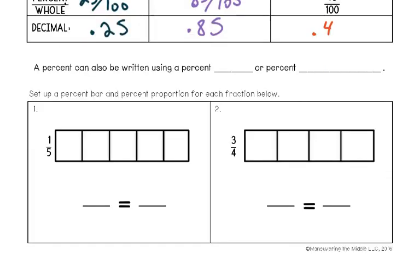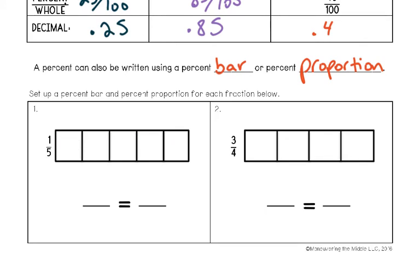We can also visualize percents with percent bars. Look at this bar — one whole bar is 100%. If I shaded the whole thing I've shaded 100% of the bar. This bar is divided into fifths, so I want to know what is one fifth as a percent. Each section is worth one, so one, two, three, four, five. At the top I've written it out of five — one out of five, two out of five, three out of five, and so on. At the bottom I've written it out of 100.